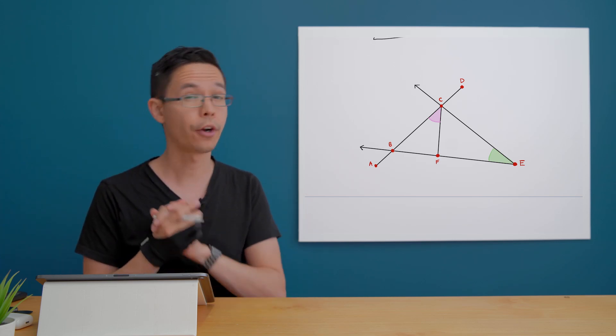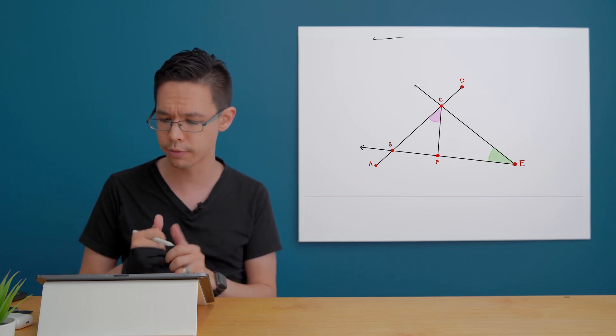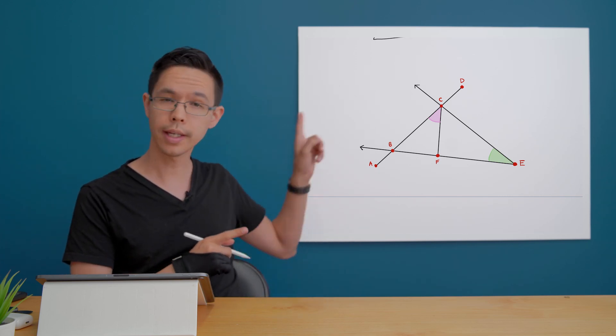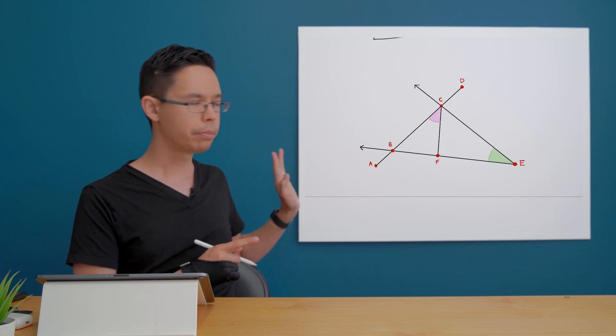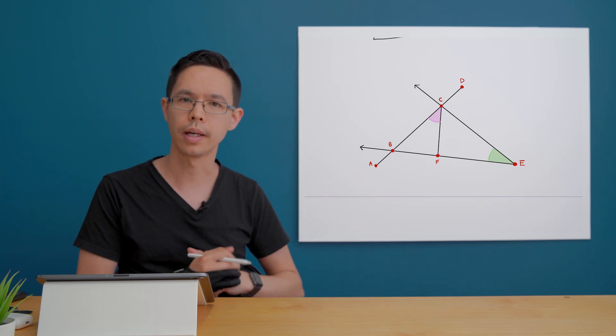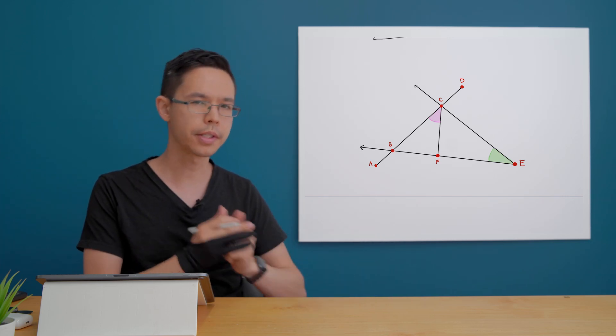What else do we have? Do we have any lines? Now remember, a line is something that extends forever in both directions. Do we have any of those? In this occasion, we don't. We can see some arrowheads on this side of our diagram, but they don't have a matching arrowhead on the other side of those straight lines.